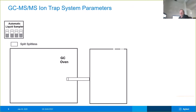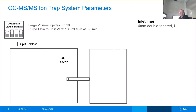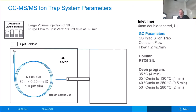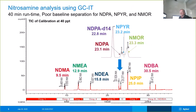Traditionally, this is how the ion trap system would work. We would use a large volume injection of up to 10 microliters to get the sensitivity we need. We'd have a split vent of 100 mL per minute at 0.8 minutes and use a 4-millimeter double tapered liner. The laboratory that ran the Varian system used an RTX-5 column, 30-meter, 0.25, 1.0 micron film thickness. Chemical ionization was used, and the runtime was 40 minutes. They detected all compounds of interest at 40 PPT, though there were some challenges with peak resolution at that 40-minute runtime.